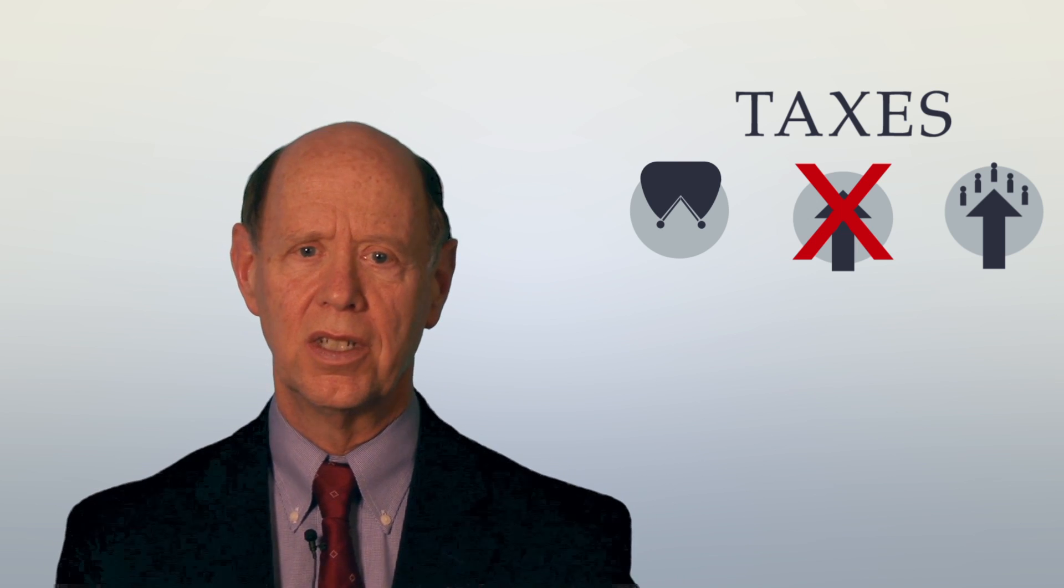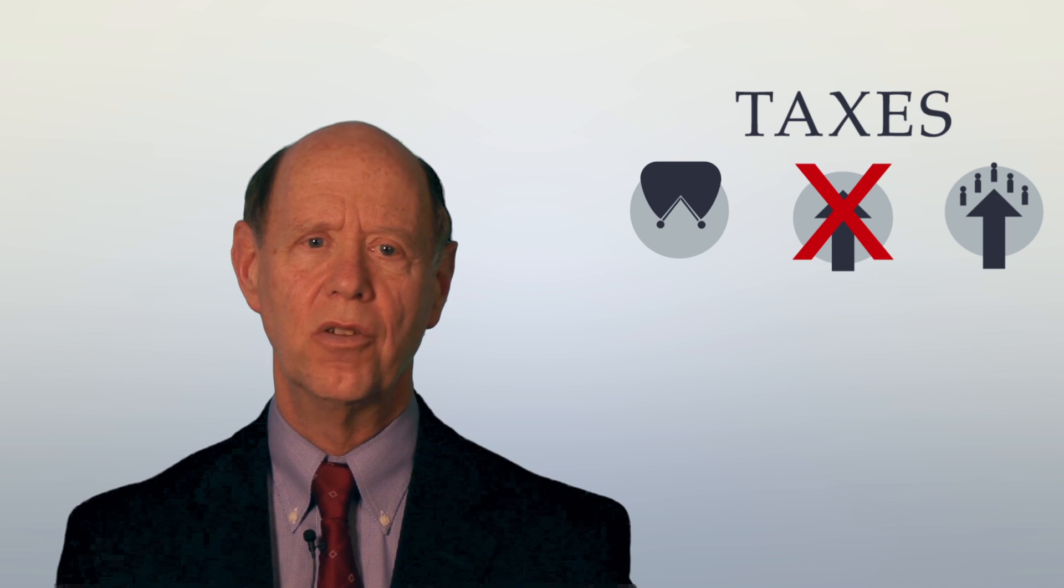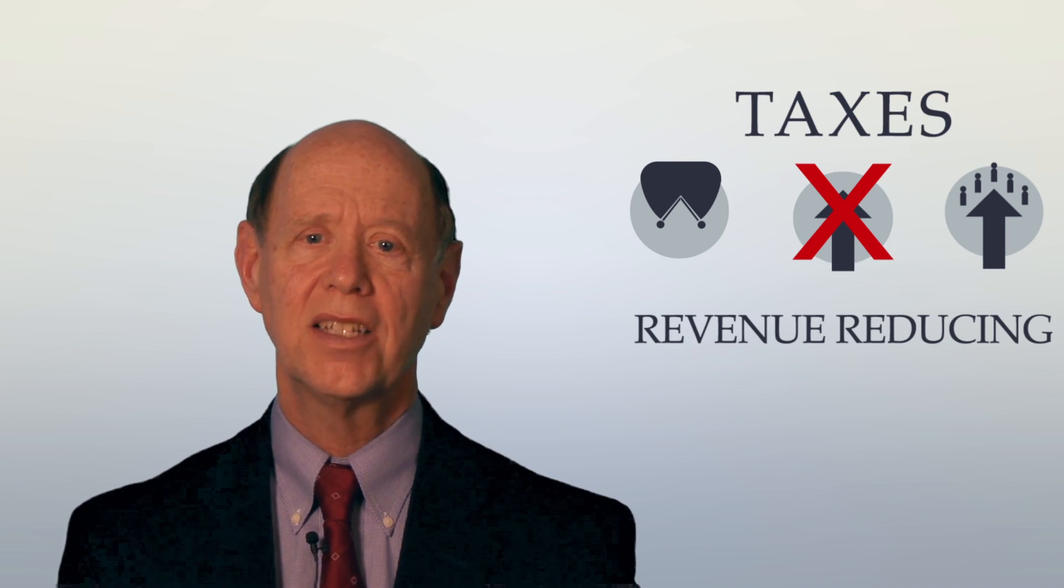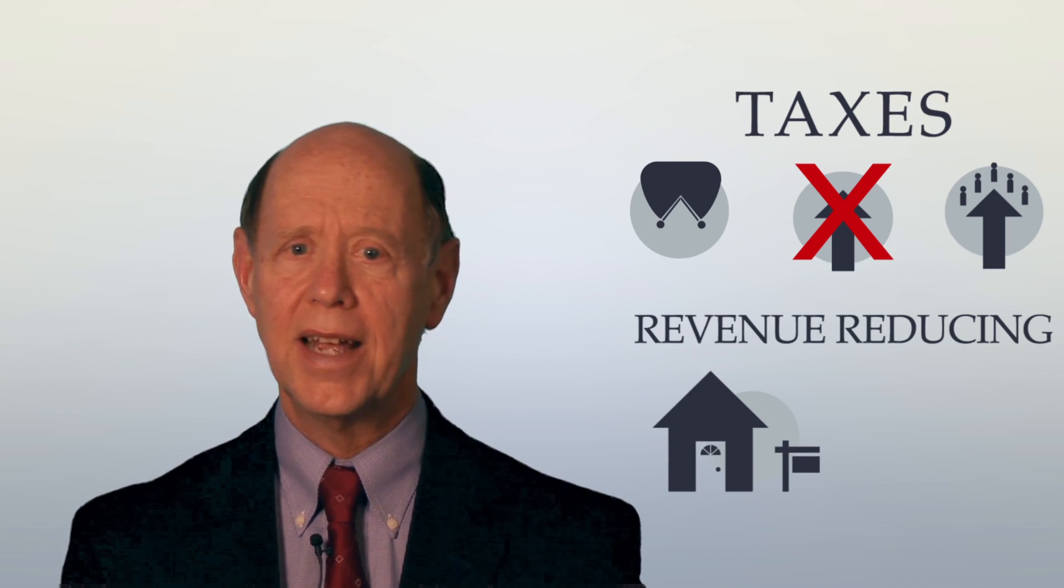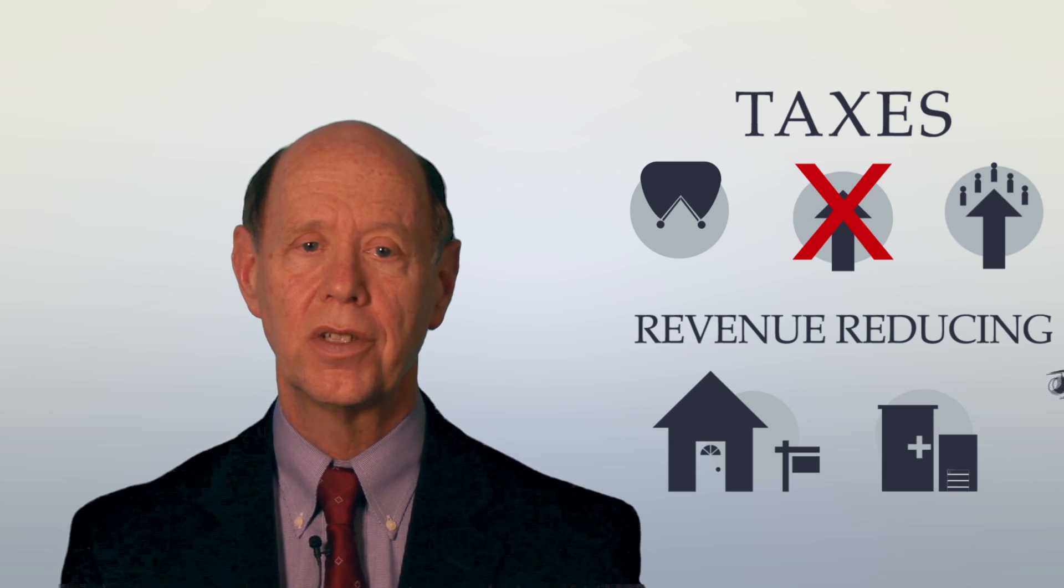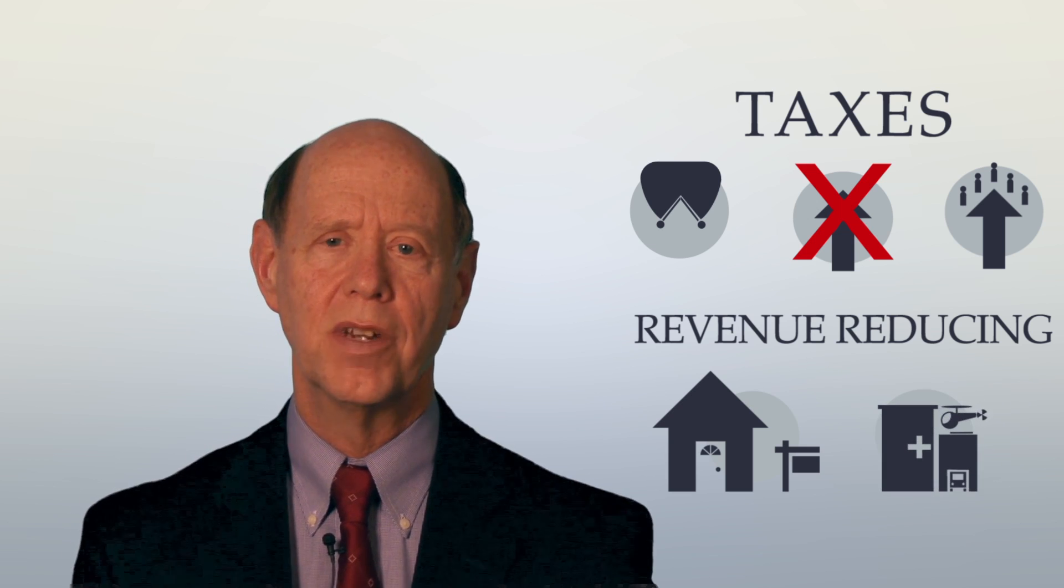On top of this, the tax code has many revenue-reducing provisions, like the mortgage interest deduction, like breaks for health insurance, that also grow automatically and are permanent parts of the code.